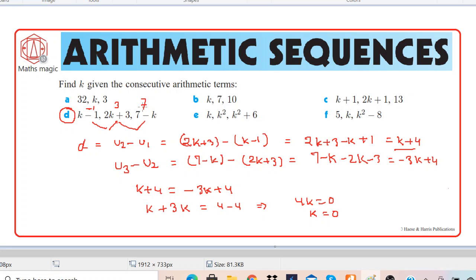So we got minus 1, 3, 7. Let's check whether common difference is the same or not. We'll do 3 minus minus 1. So 3 minus minus 1 is 4, and then 7 minus 3 is also 4.